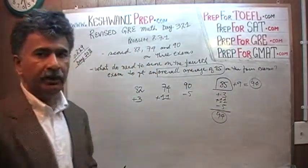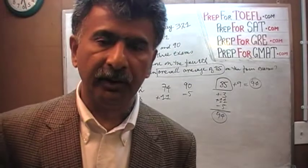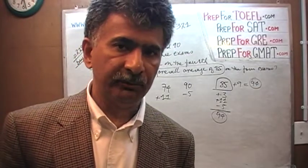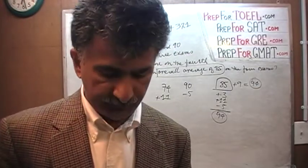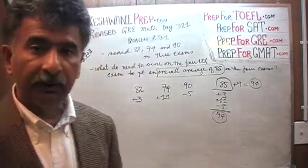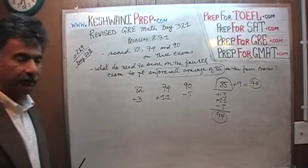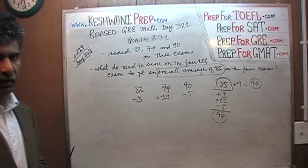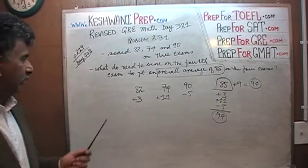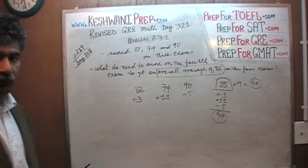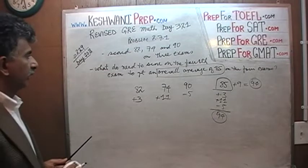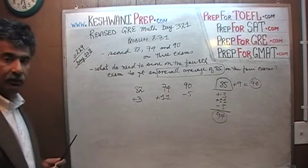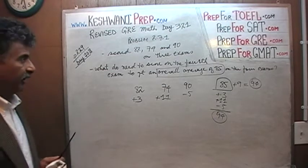We needed a score of 94 on the fourth exam to have an overall average of 85. That's all. If you want to do it the classical way, you will find it on day 108. Let's do the next problem.